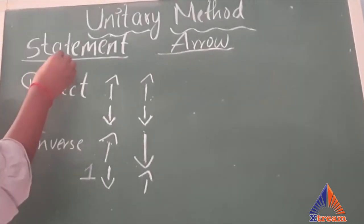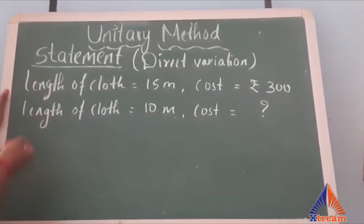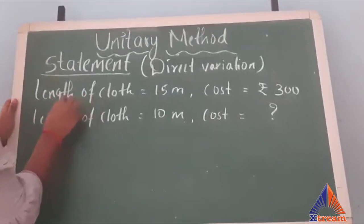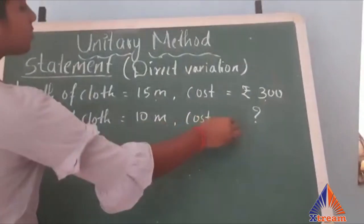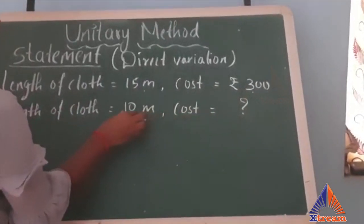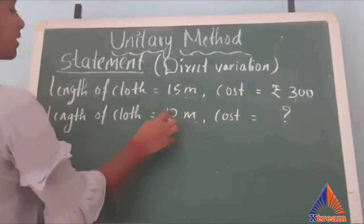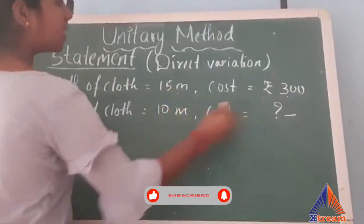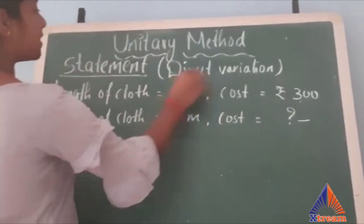Now let's solve a problem using the statement method with direct variation. The question is: the length of cloth is 15 meters and its cost is rupees 300. If the length of cloth is 10 meters, find its cost. Since 10 meters is less than 15 meters, the price will also be less — if one decreases, the other also decreases. So this is a direct variation.